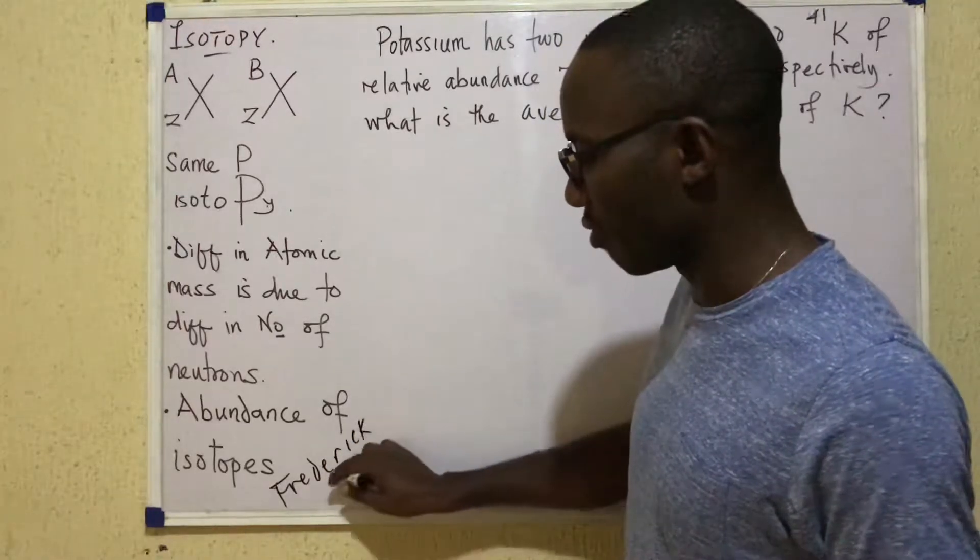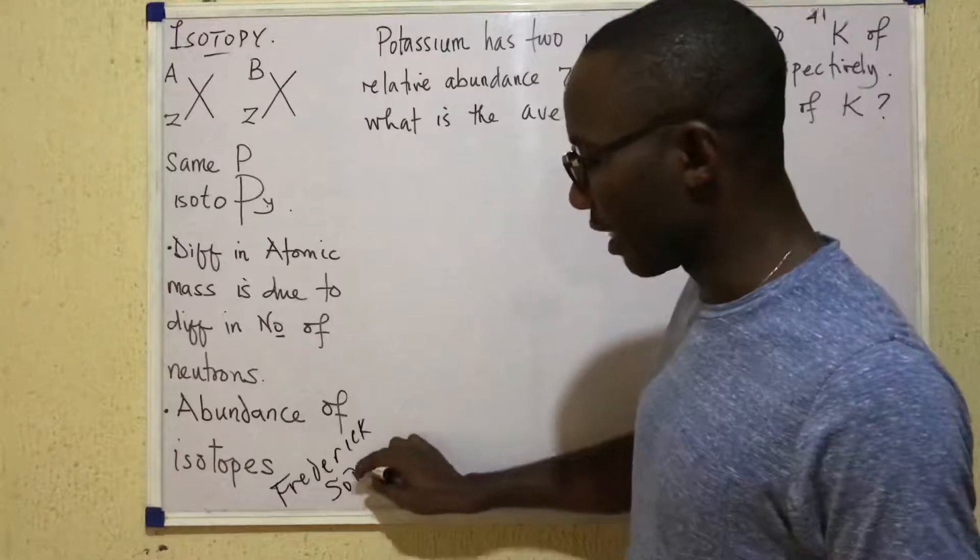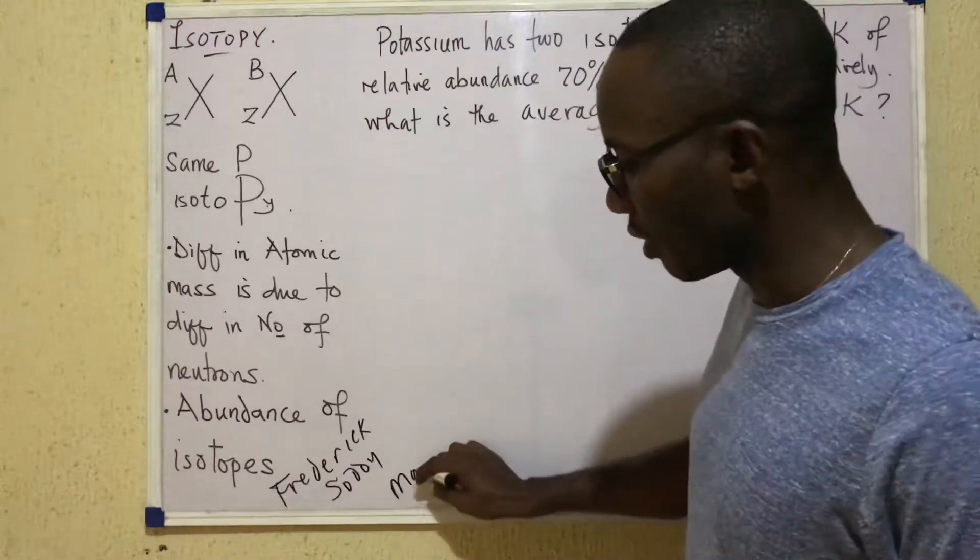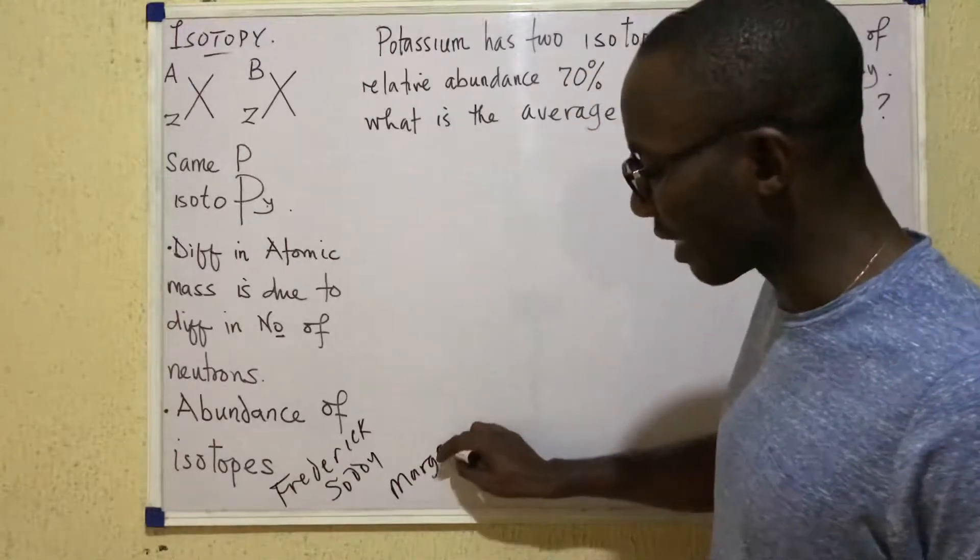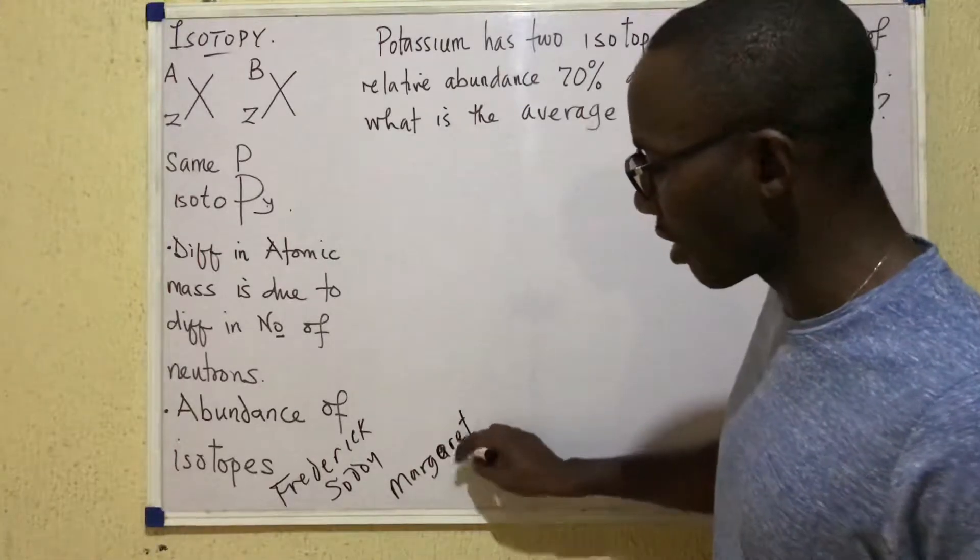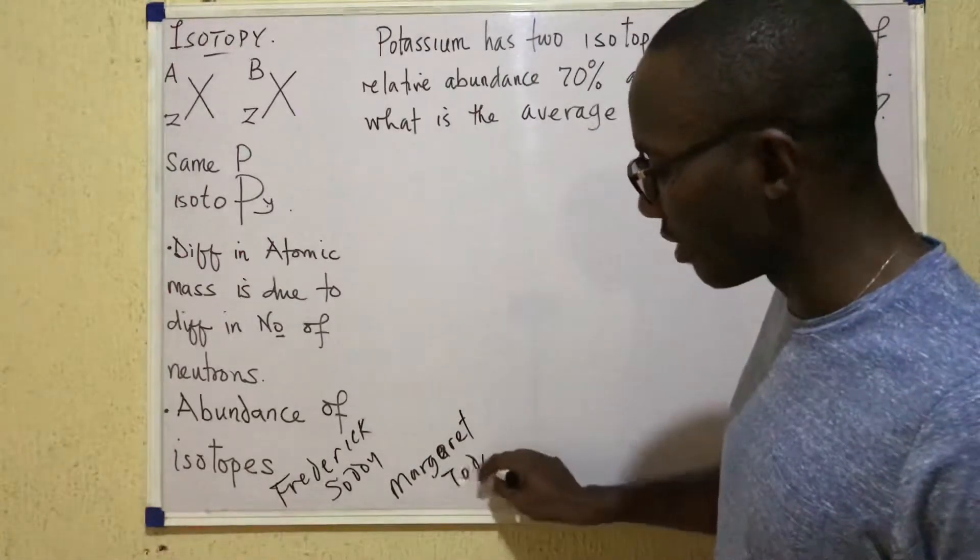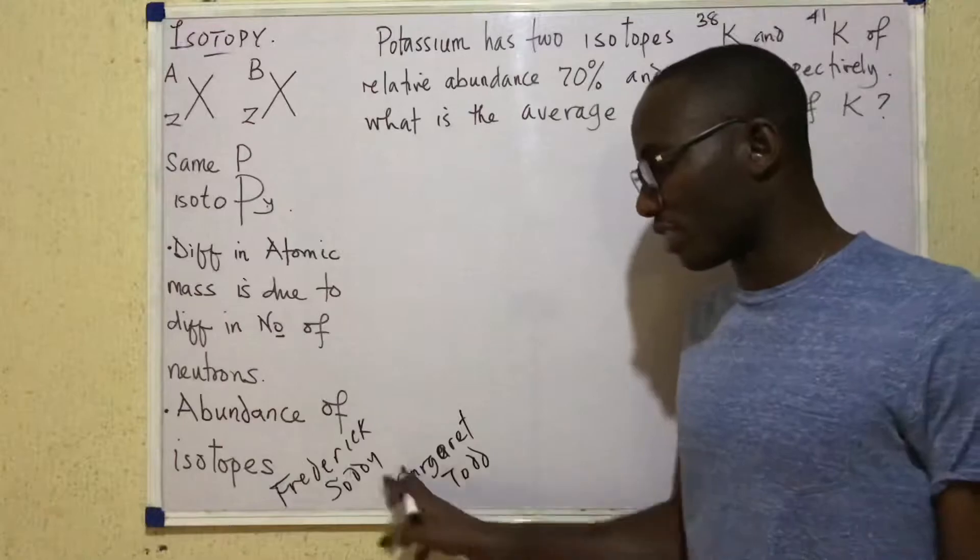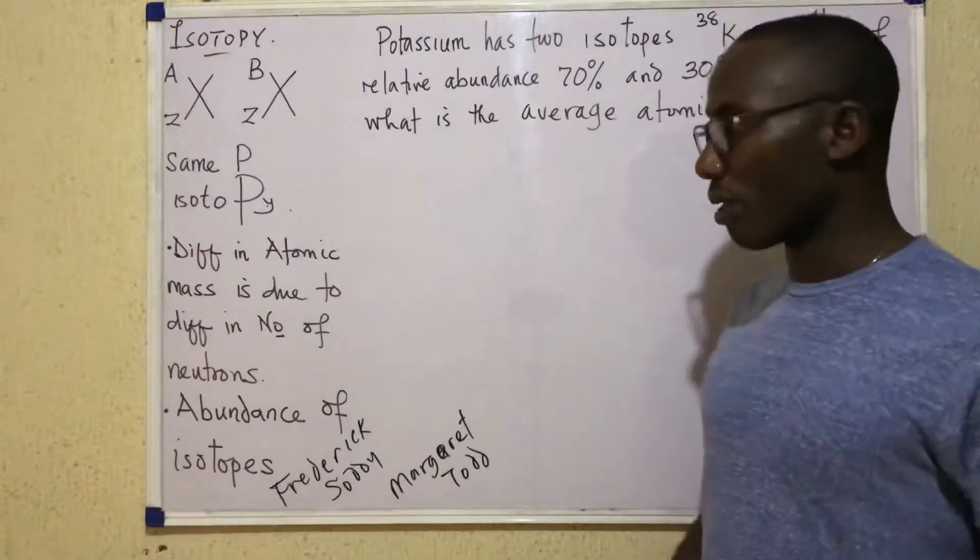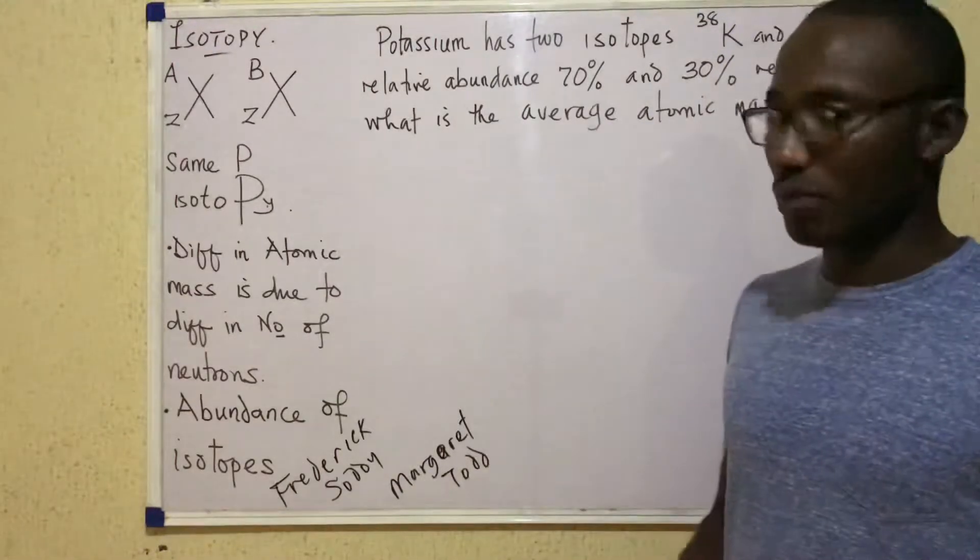However, Frederick Soddy is the person that takes the credit when it comes to the discovery of isotopy. Margaret Todd is the person who coined that name - she coined the term isotopy and suggested it to Soddy to describe the phenomenon that he had just observed.